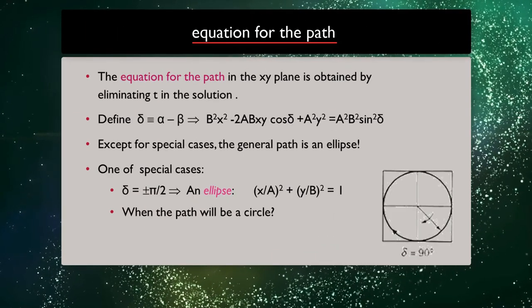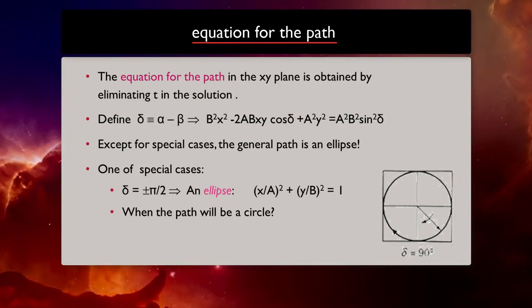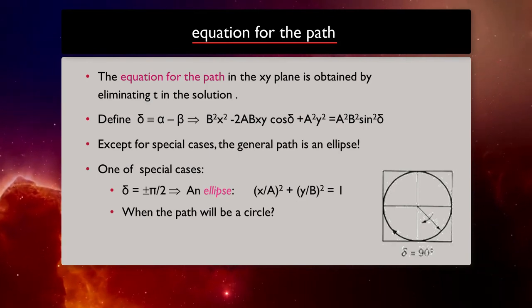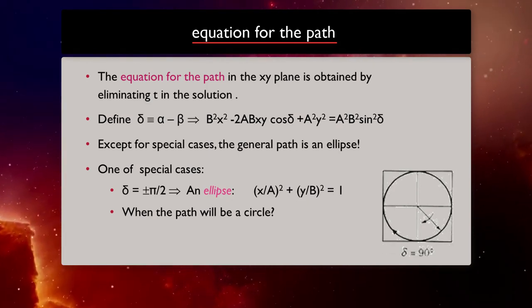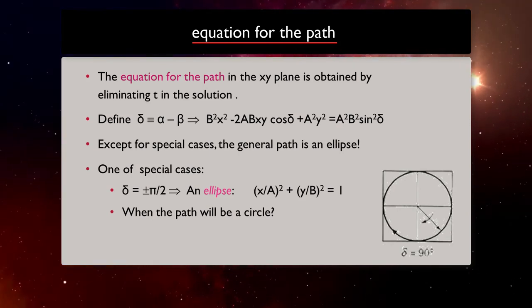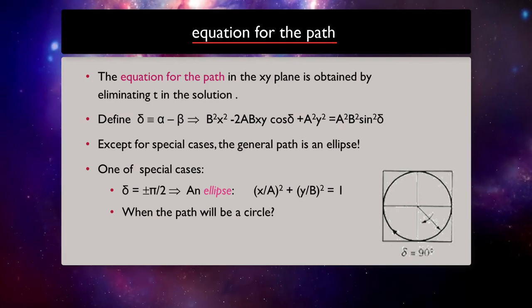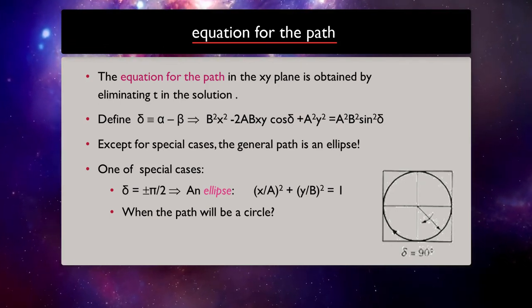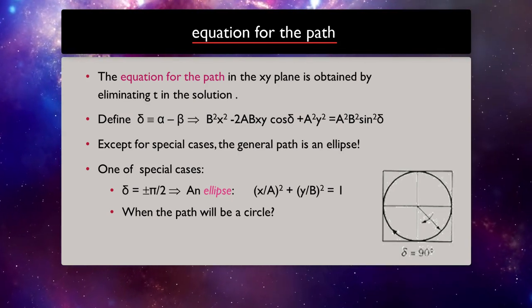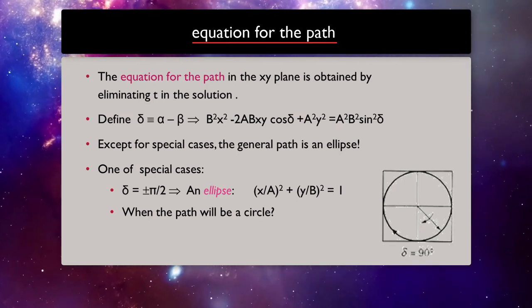Now, if we want to plot phase portrait for the system, what we need to do is find all of its paths. An equation for the path is obtained by eliminating t in the solutions, and we will do it for this system by defining a new parameter, δ equals to α minus β. Then, if we play with the equations a bit, we can find out that except for special cases, the general path is an ellipse.